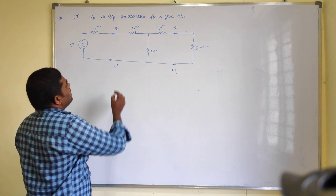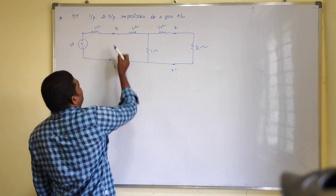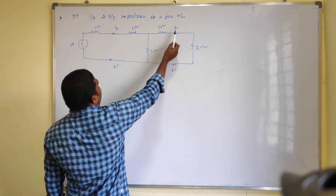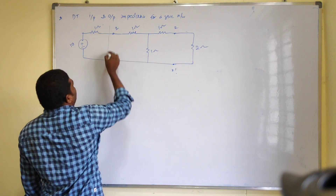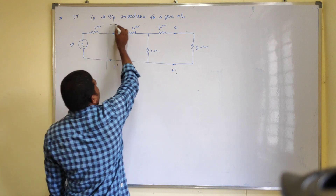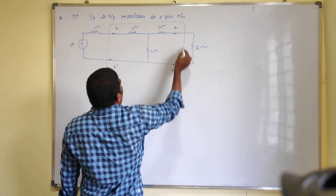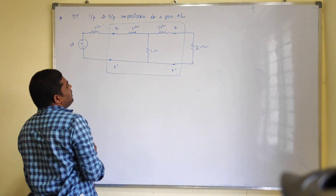If you observe here, this is one, one dash, two, two dash — that means we have a two-port network up to this point.